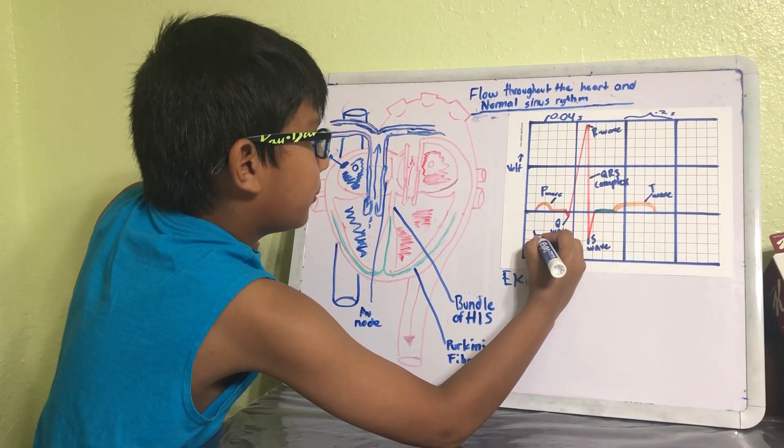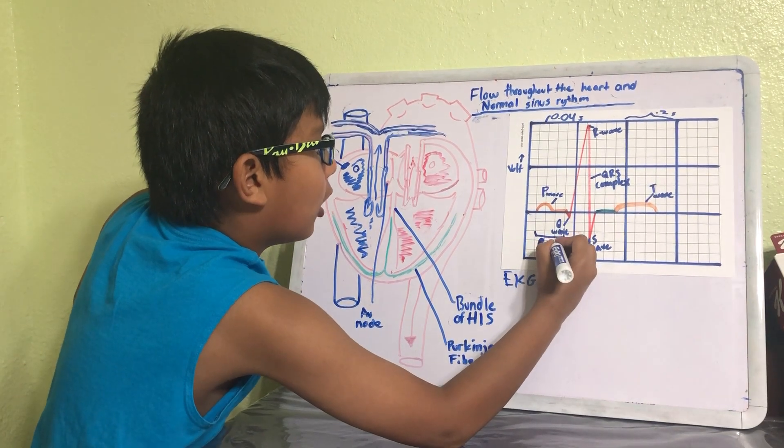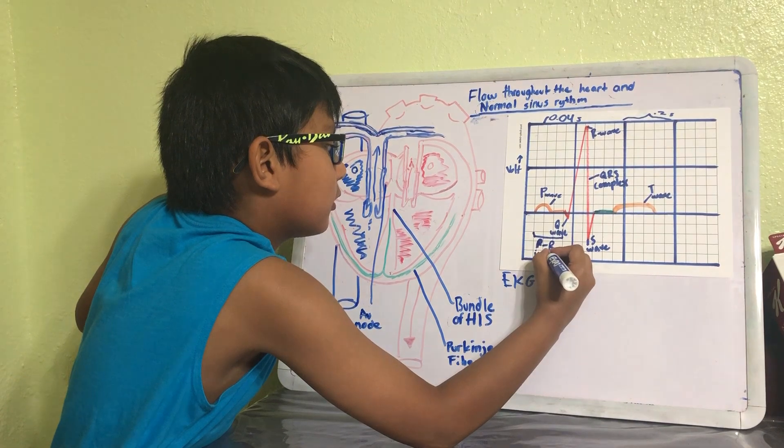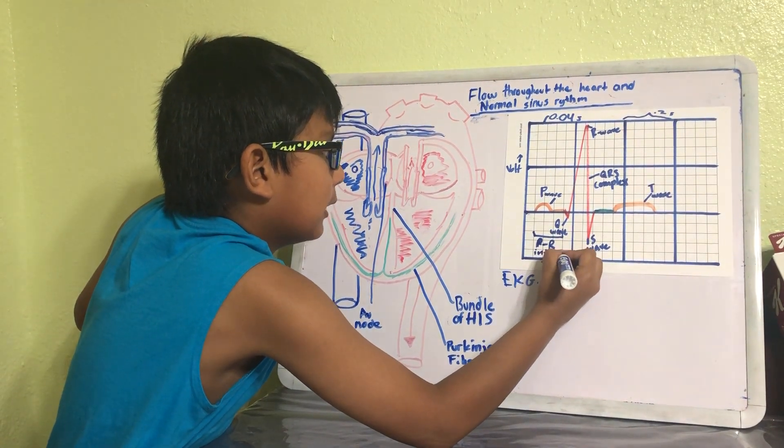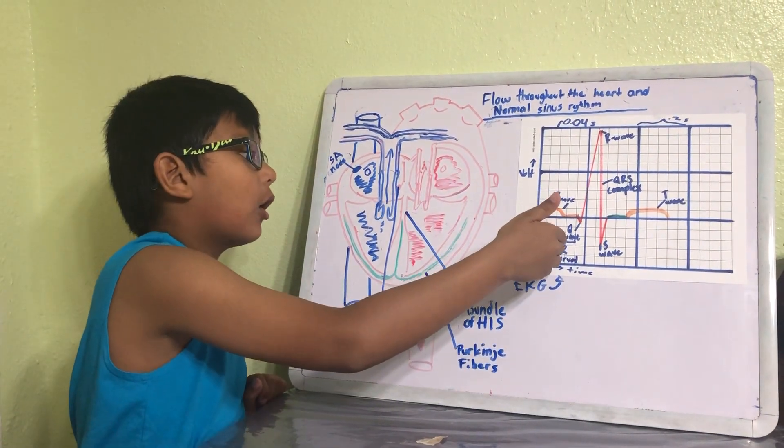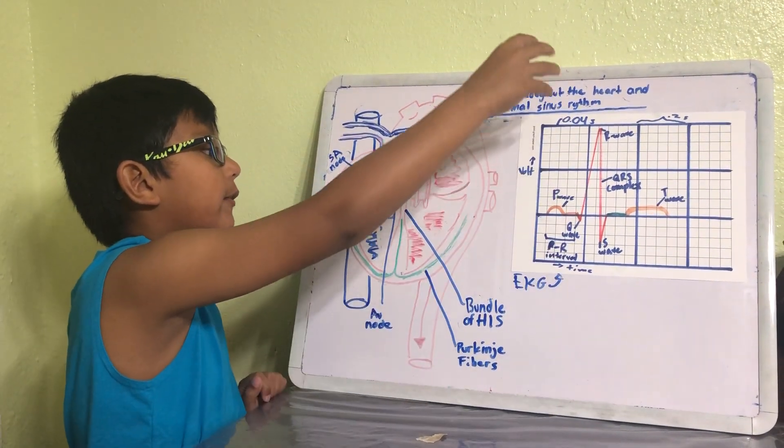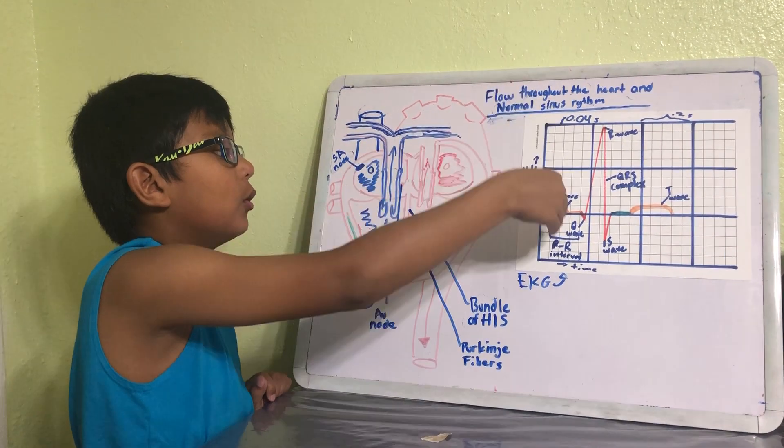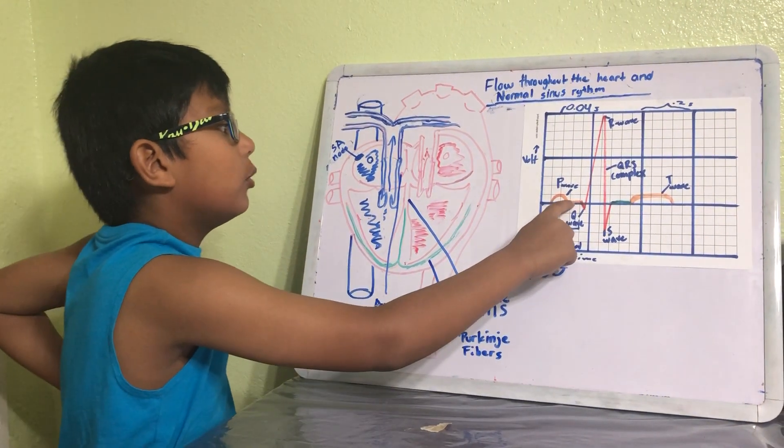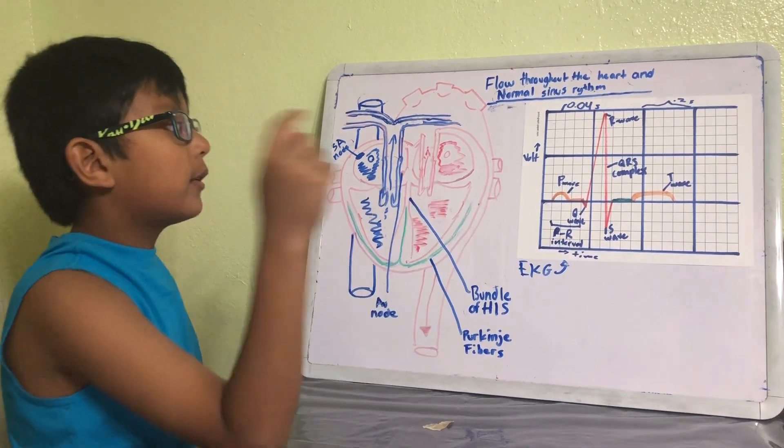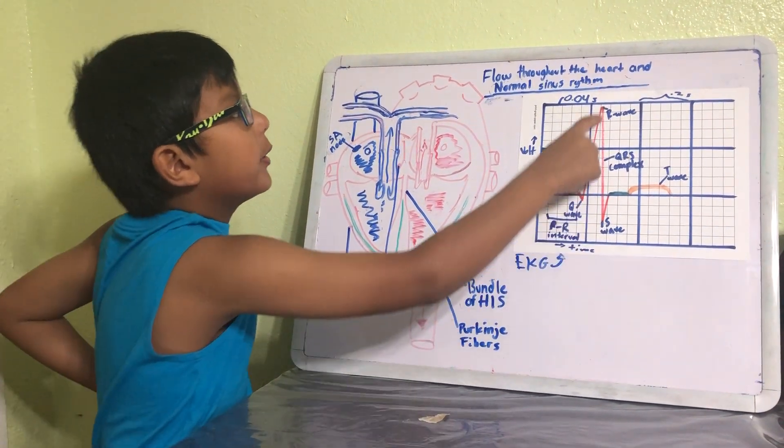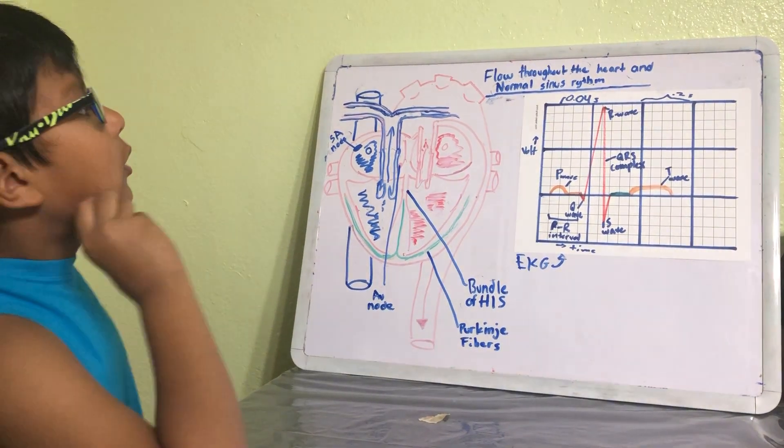The interval between the P and Q wave is called the PR interval. Now you might be saying, well why is it called the PR interval when it's going from the P wave to the Q wave? Well, keep in mind that on an EKG you might not even notice the Q wave, so we just go to the R wave.